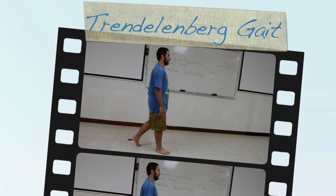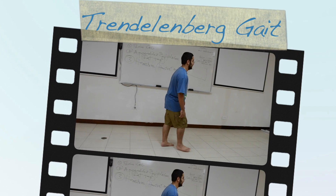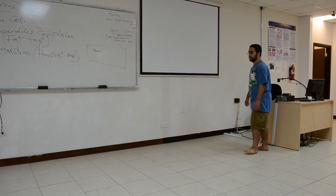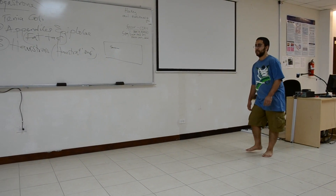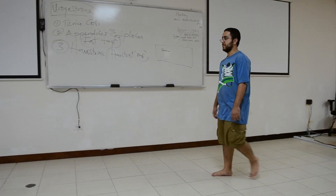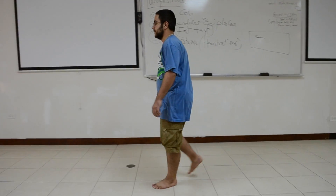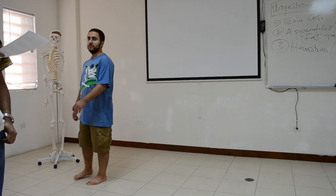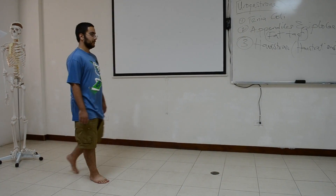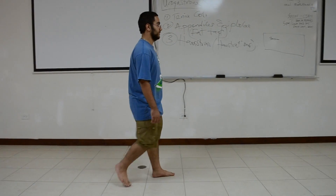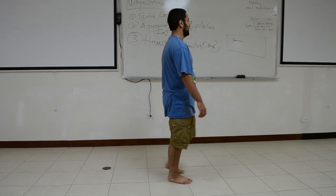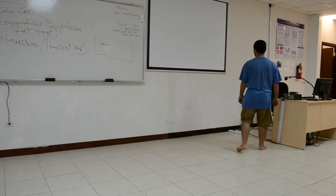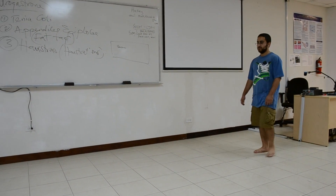Trendelenburg gait results from the loss of function of the lesser gluteal muscles. These muscles are hip abductors and keep the pelvis level during unilateral stance phase. Notice that in the Trendelenburg gait, the hip is dropping to the unaffected side while there is a slight lateral flexion of the trunk to the affected side.